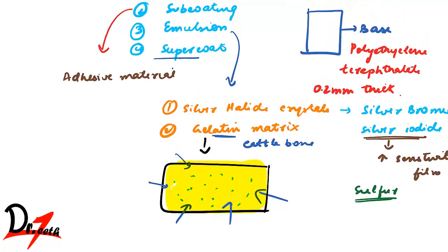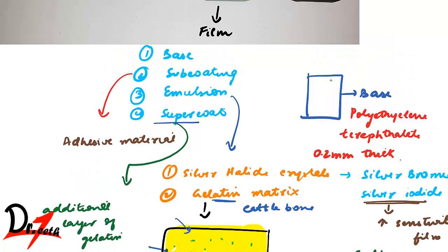Now finally we have this supercoat. So this is an additional layer of gelatin. So this was our base, and then above it we will have a subcoating, and then we have emulsion, and then we have supercoat. So this was the composition of an x-ray film. If you like the video, please give a thumbs up. See you in the next video. Allah Hafiz.